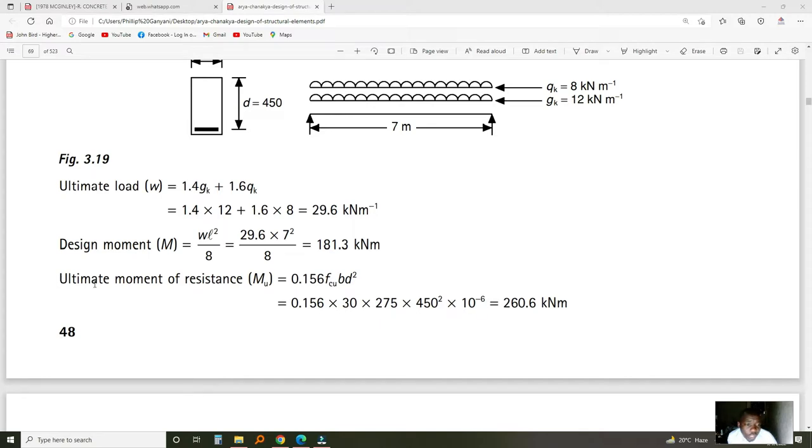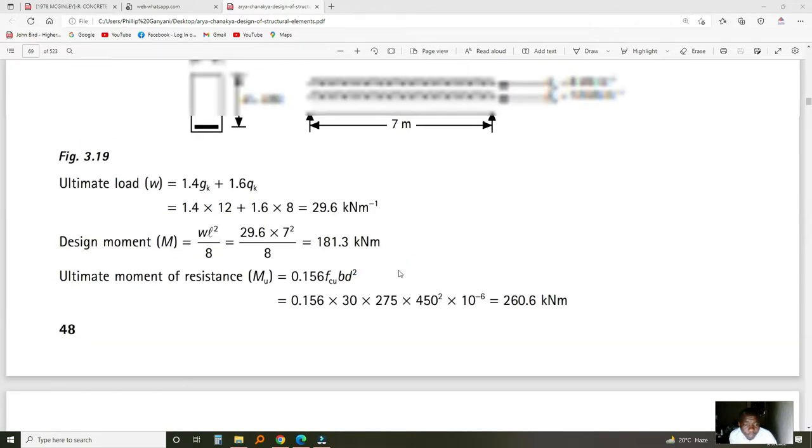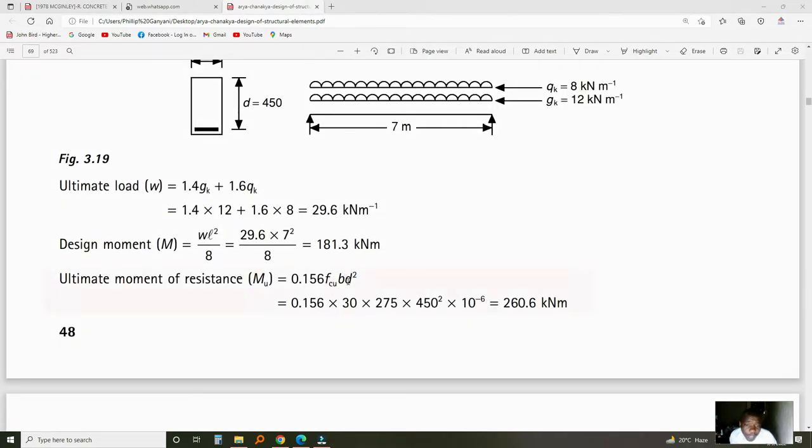First, we check the ultimate moment of resistance for the beam. The ultimate moment of resistance is the maximum moment a beam section can carry. You multiply 0.156 times FCU, the strength of concrete. B is the breadth of the beam and D is the depth. You multiply by 10 to the power of minus 6 to change from newton millimeters to kilonewton meters to equate with the design moment. We come up with 386.8 kNm.